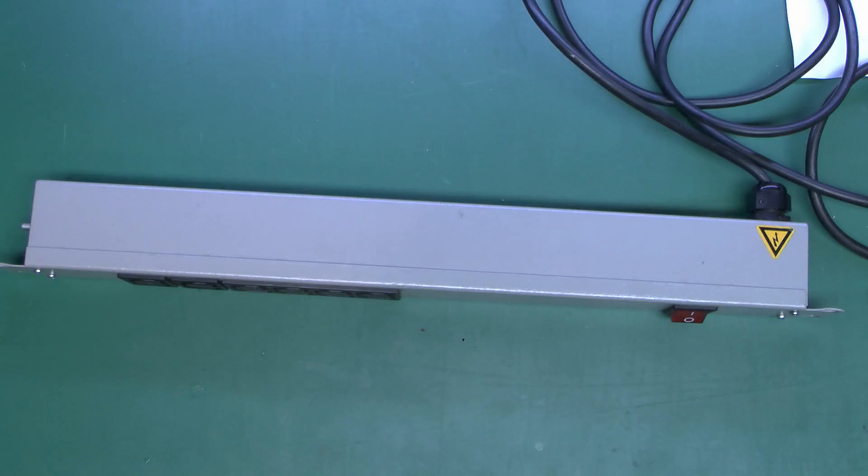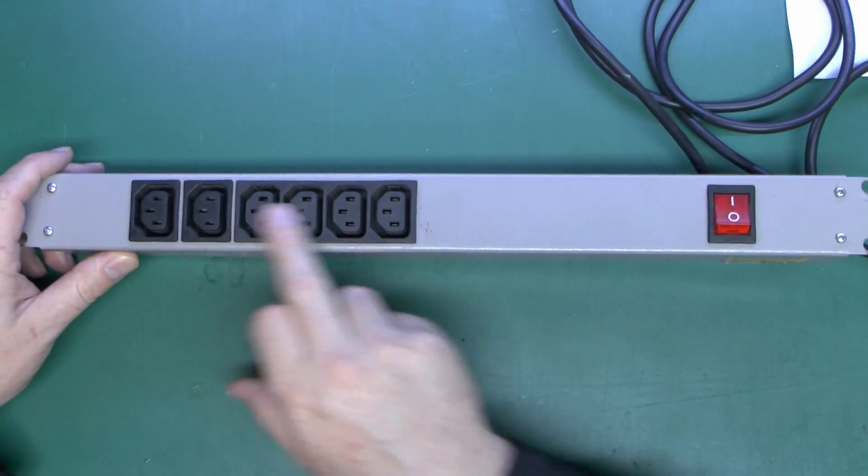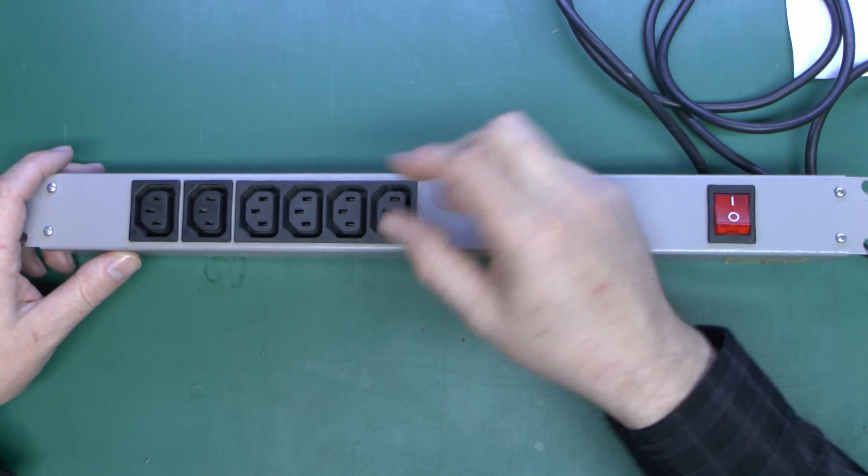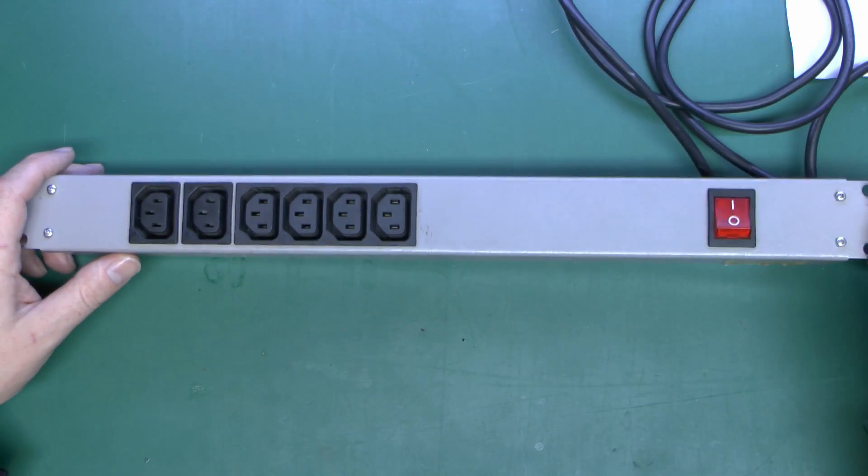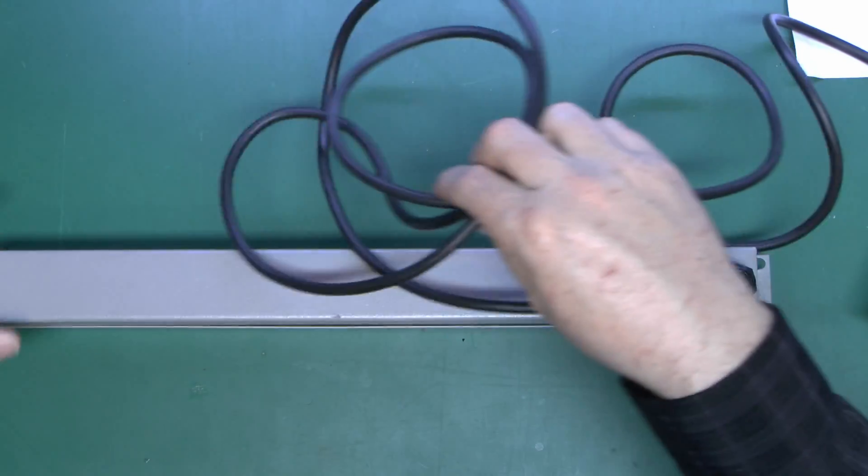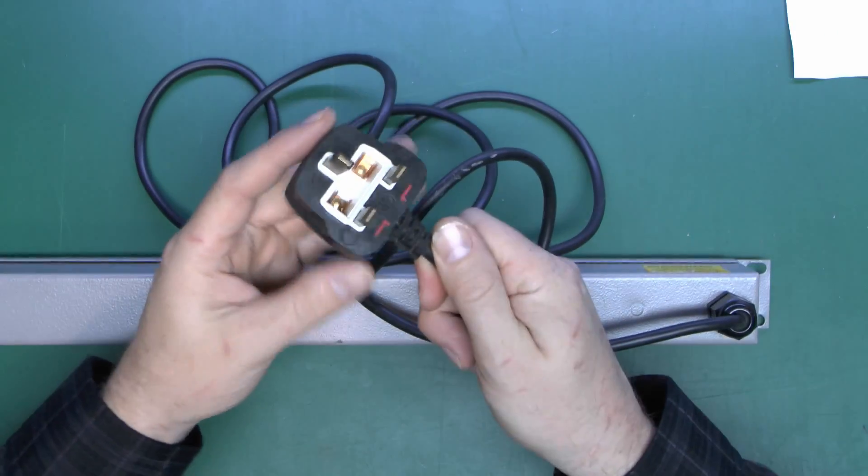So let's open it up and have a look inside. Here's that thing, fairly straightforward just to switch there. Outlets here for the bits of equipment, so you just have a short lead which would plug in here, and the other end goes into whatever equipment you have in the rack. And then the power just comes in on this lead here which has a normal UK plug on the back.